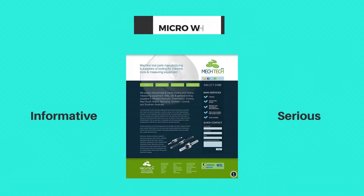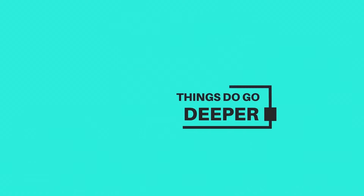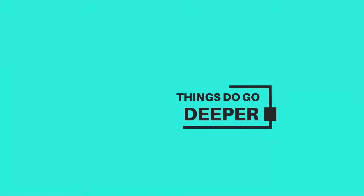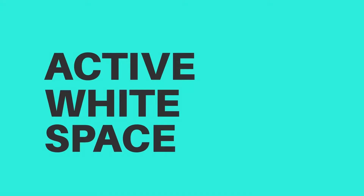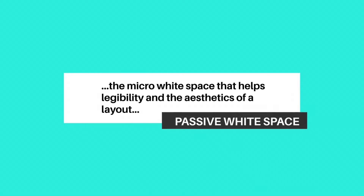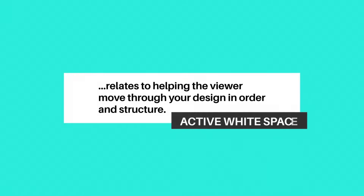Things go deeper than just macro and micro white space. We can enhance our designs with passive white space and active white space. Passive white space refers to the micro white space that helps legibility and the aesthetics of a layout without guiding the viewer in terms of structure and viewing order. Active white space, on the other hand, relates to helping the viewer move through your designs in order and structure.